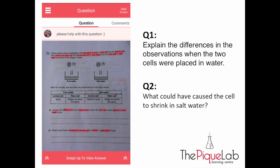Today I'm going to talk about cells. Let me read the question first. Nitya carried out an investigation with two pairs of cells, a plant cell and an animal cell. She placed one plant cell and one animal cell in pure water and the other pair in salt water as shown in the diagram below.